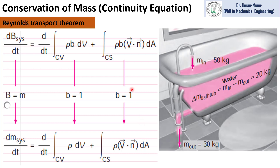In this video, we will derive the conservation of mass equation, which is also called the continuity equation. In our previous video, we derived the Reynolds transport theorem — the link is provided in the description. This is the general form of the Reynolds transport theorem, which relates the change in the property of a system to the change in property of a control volume.